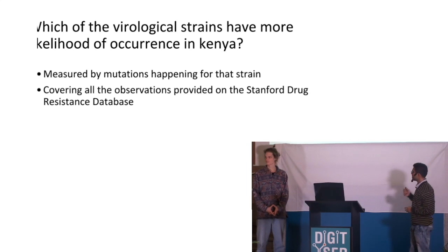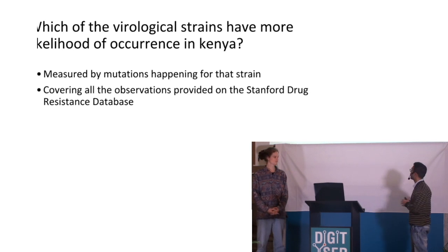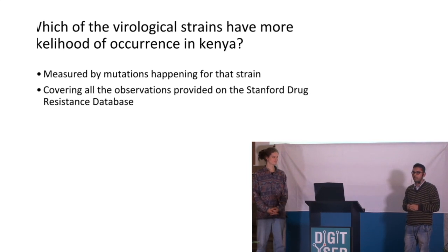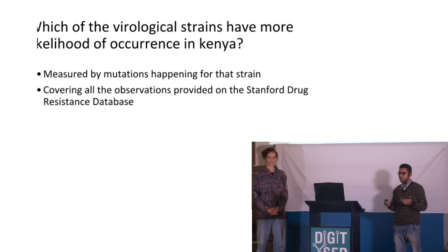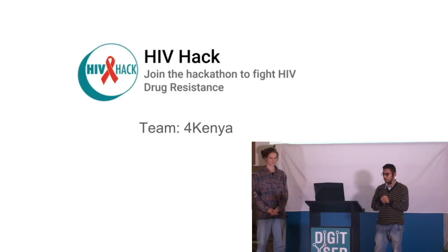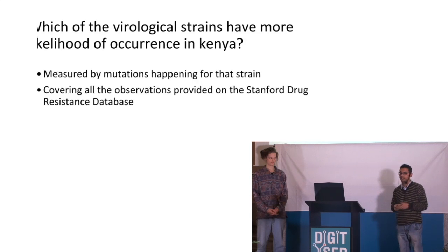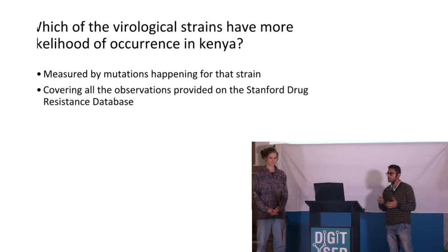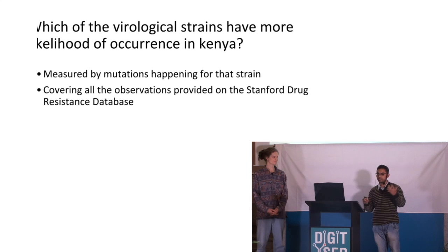We saw this problem in Kenya, and we are trying to solve the problem of virological strains which have a higher likelihood of occurrence in Kenya. These are different strain levels related to virologic drug resistance. Doctors use these strains in tests to determine if a patient is drug resistant, and there are different mutations happening at the same time.